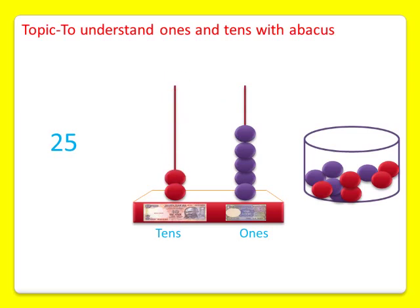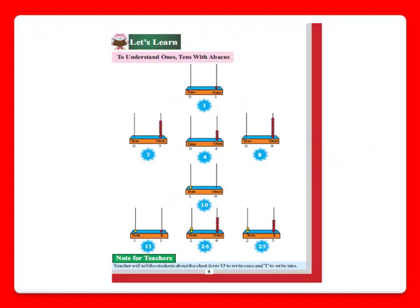Now we have shown twenty-five on the abacus with the help of two tens and five ones by using beads. I have explained one sum from page number nine to you, and the rest of the sums you try to do yourself.